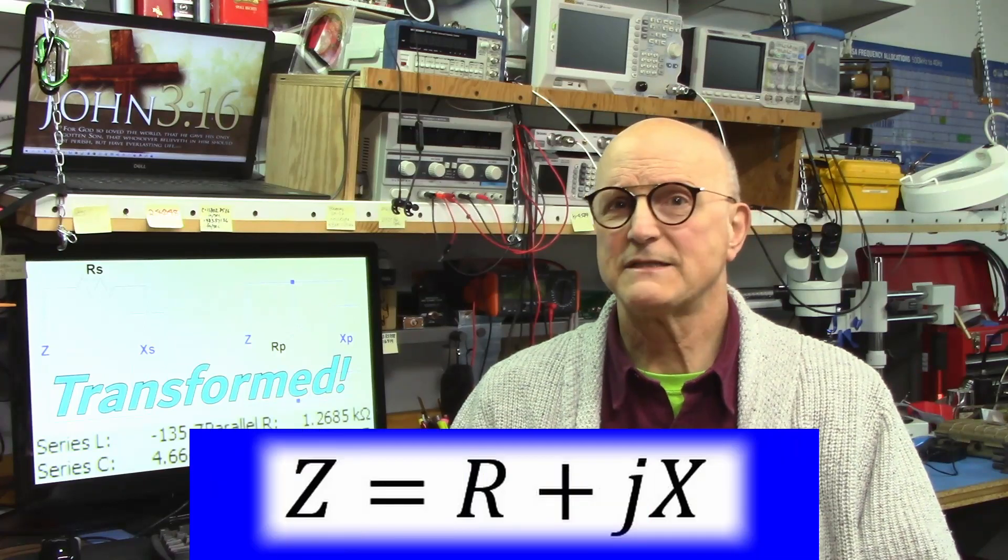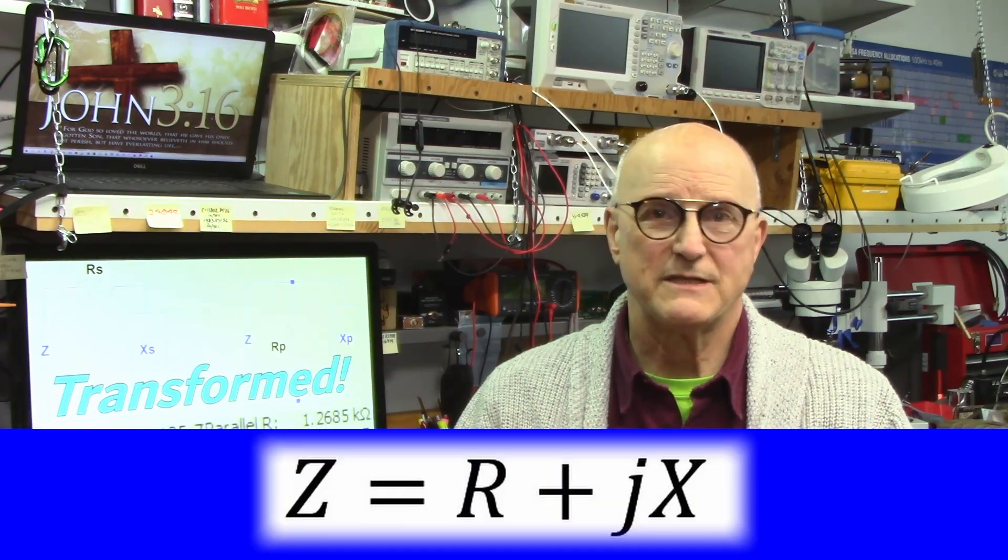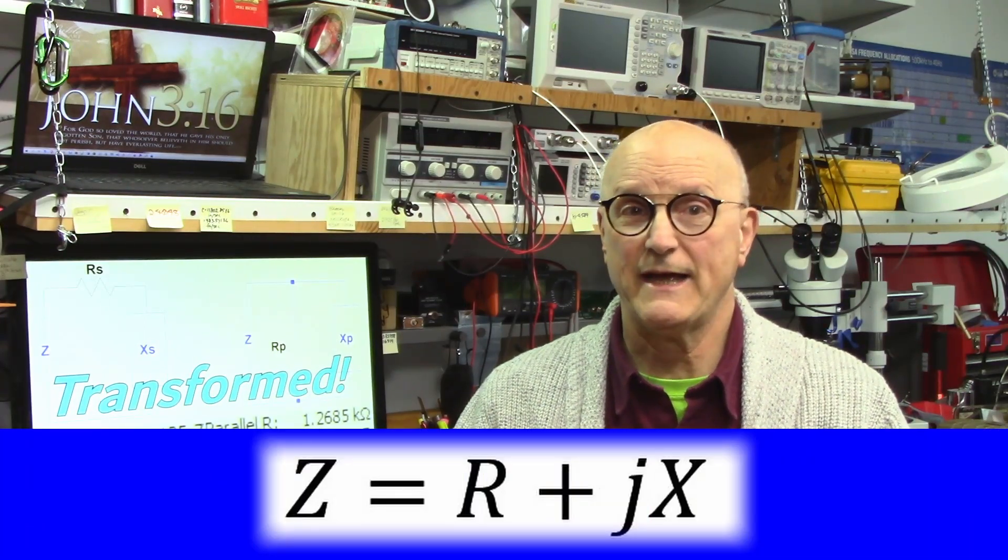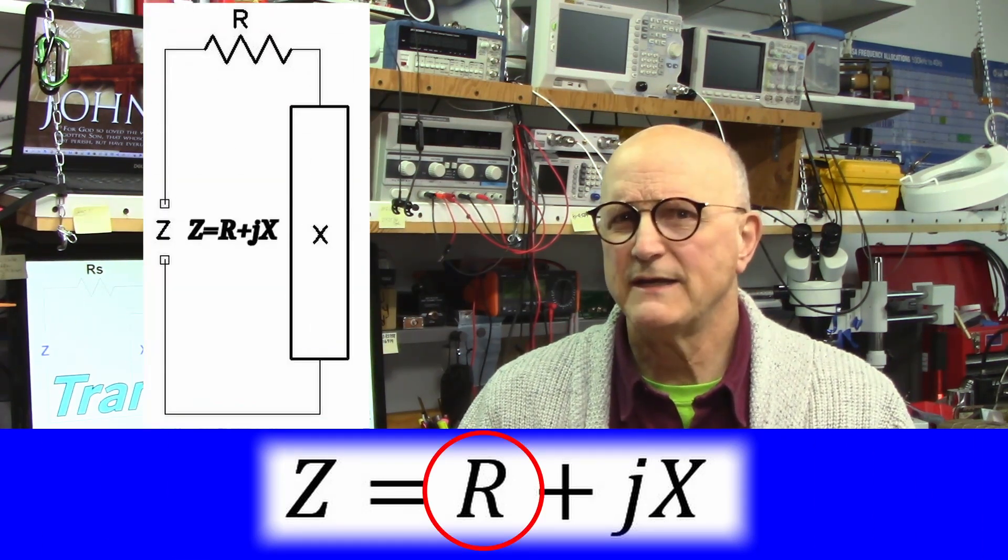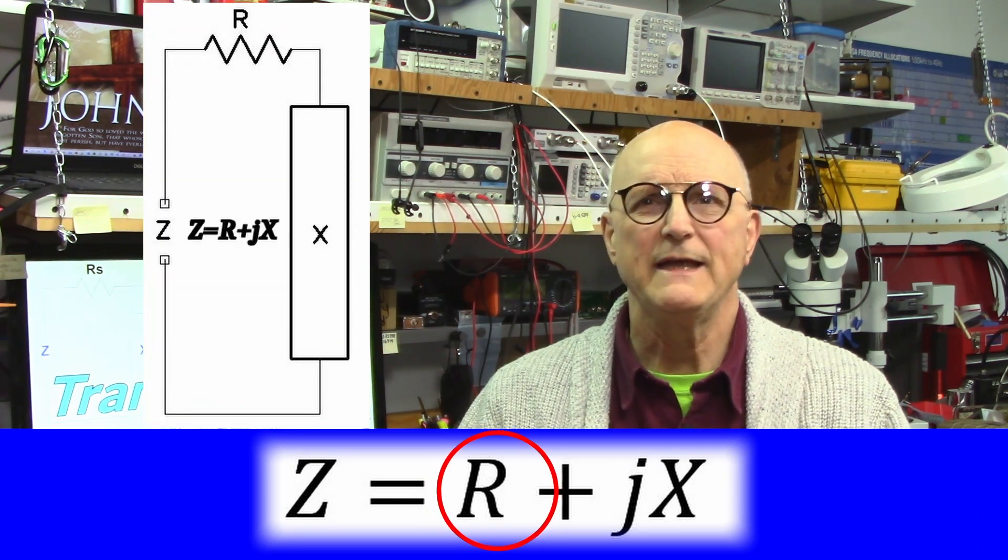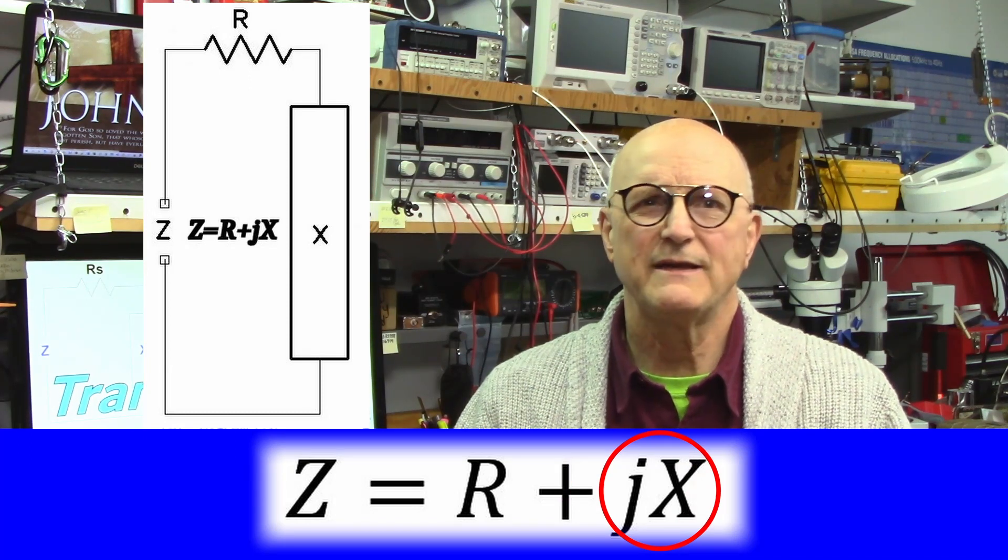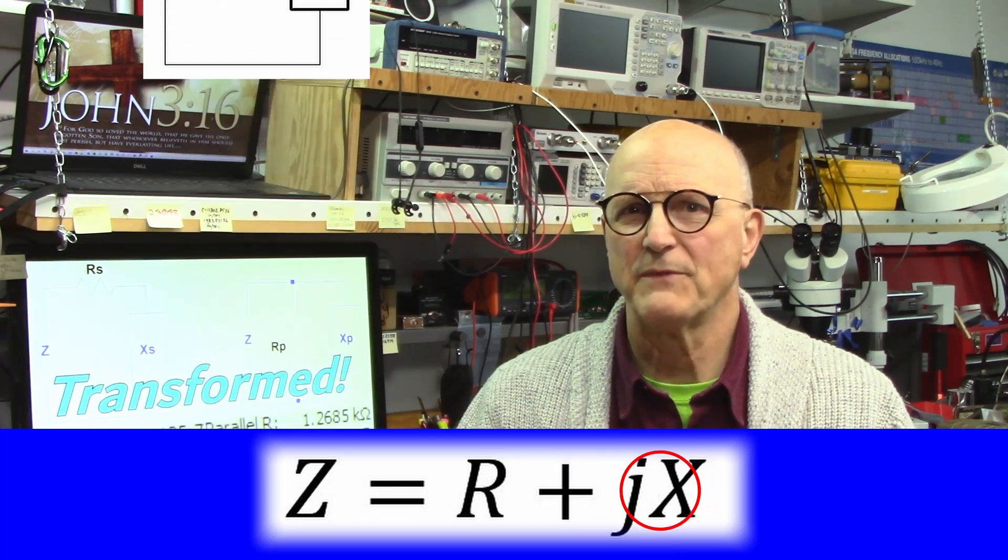The jX term is the AC equivalent and resides in the reactive realm. Thus the expression impedance equals R plus jX is telling us that we have some pure ideal resistive component in series with a pure ideal reactive component. This is a composite impedance, which is the total effect of all the various things that make up the device being measured.